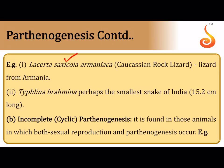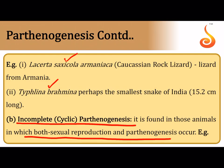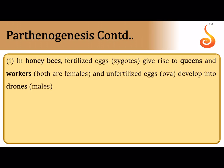Incomplete or facultative parthenogenesis means within the life cycle of an organism, during some seasons it reproduces by parthenogenesis and during other seasons by sexual reproduction. This type involving both parthenogenesis and sexual reproduction is called incomplete or cyclic parthenogenesis. The best example is honeybees — workers are produced by fertilization and drones are produced by parthenogenesis. If the queen allows fertilization the egg develops into a worker; if she lays an unfertilized egg it develops into a drone.